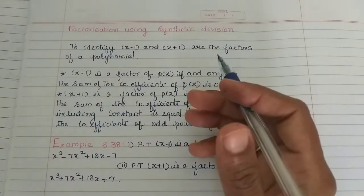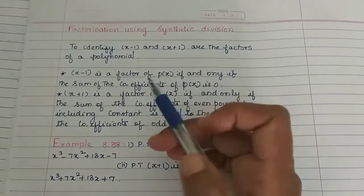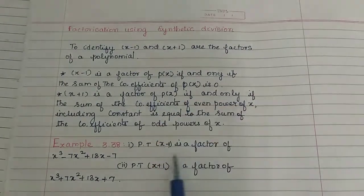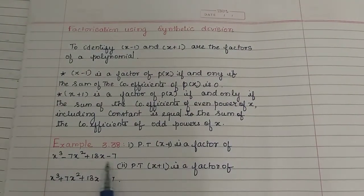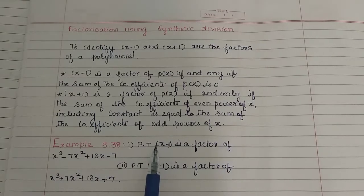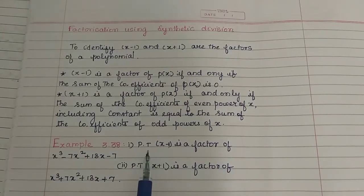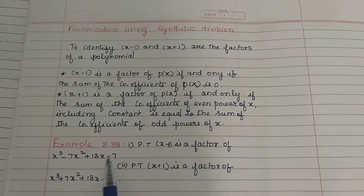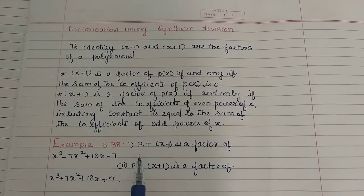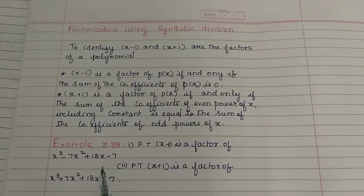We will talk about synthetic division, factors, and a polynomial. We will talk about the factor using the trial and error method. We will check values: first plus 1, minus 1, plus 2, minus 2 — to see which gives 0.